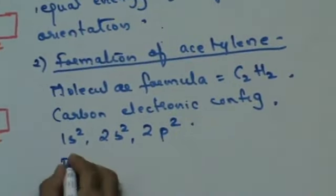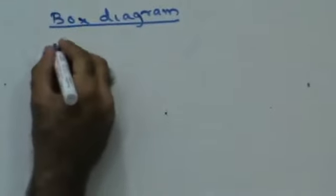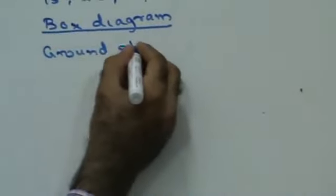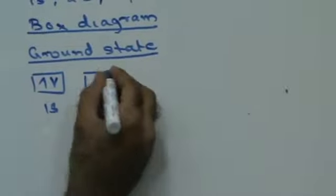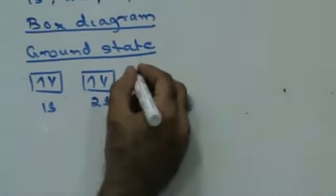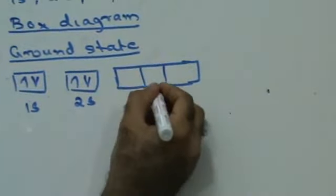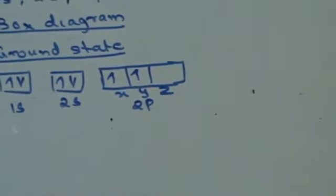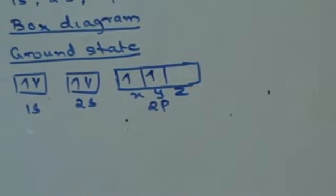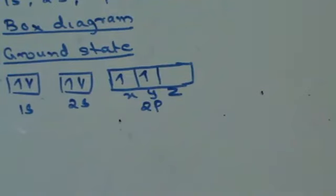Let's see the box diagram. Ground state diagram will be like this: 1s, 2s, 2p. This is going to be the ground state diagram — 1s2, 2s2, 2p2. Remember that the electrons get filled in one direction before they get filled in the other direction. Will this go into the excited state? Yes. Why? Because it has an empty orbital. If there is an empty orbital, a given atom will go into the excited state.